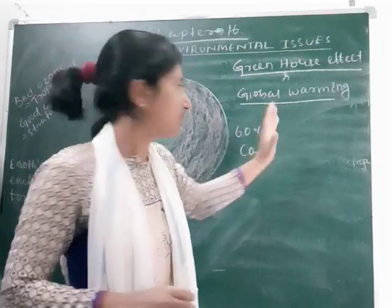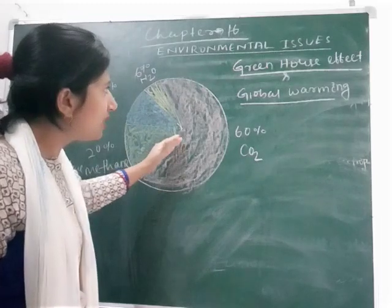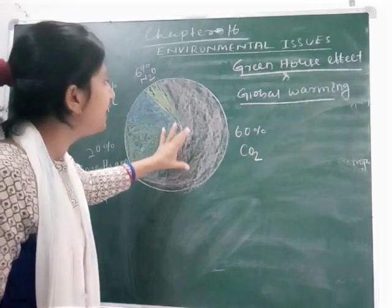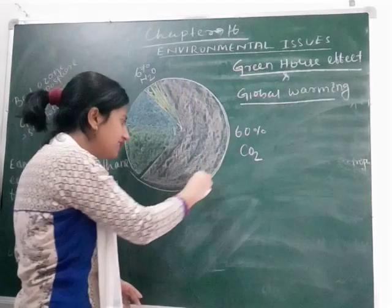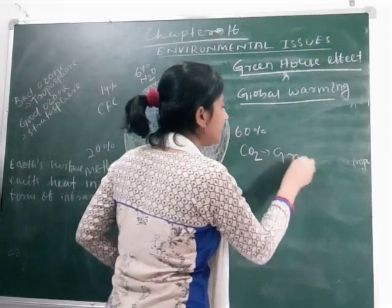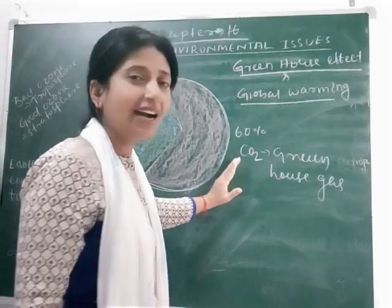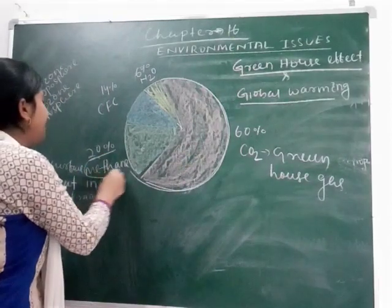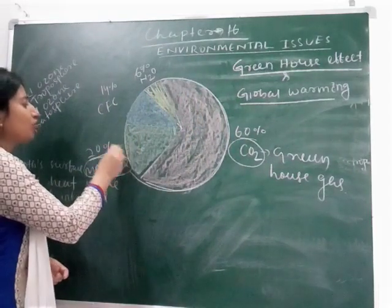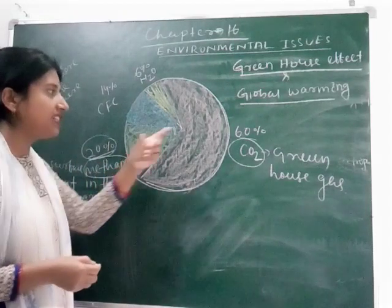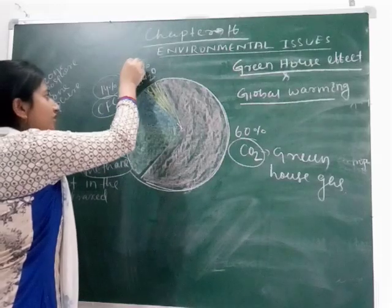Due to the greenhouse effect, global warming occurs. Here is a chart of different gases responsible for global warming, called greenhouse gases. Carbon dioxide is 60% of the greenhouse gases in the earth's atmosphere — it is specially called the greenhouse gas. Methane is 20%, CFC is 14%, and nitrous oxide is 6%.